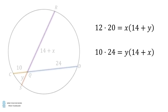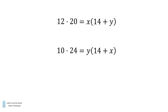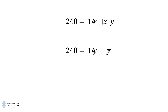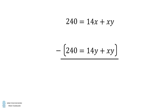Let's now focus on these two equations. First, we'll simplify the left-hand side — each left-hand side equals 240. Then we will distribute on the right-hand side. We will subtract the second equation from the first equation and cancel out the XY terms. The resulting equation is 0 equals 14X minus 14Y, which means X equals Y.